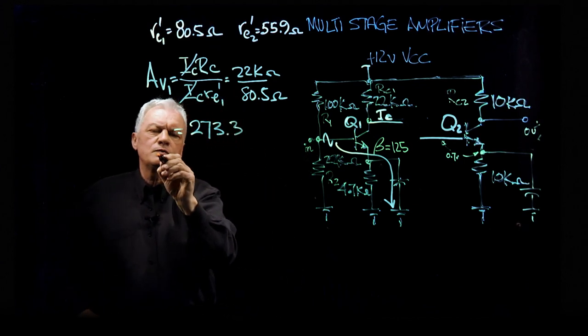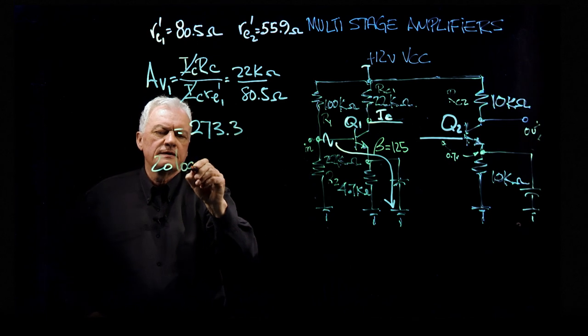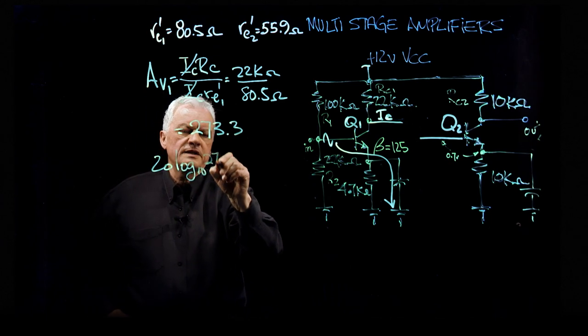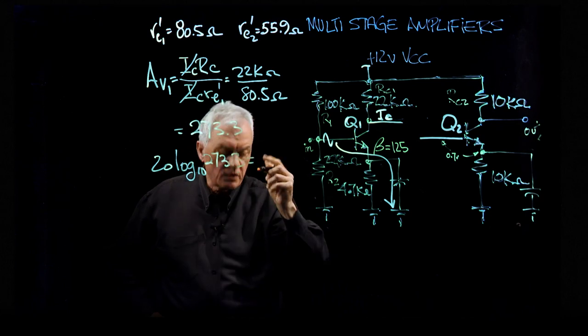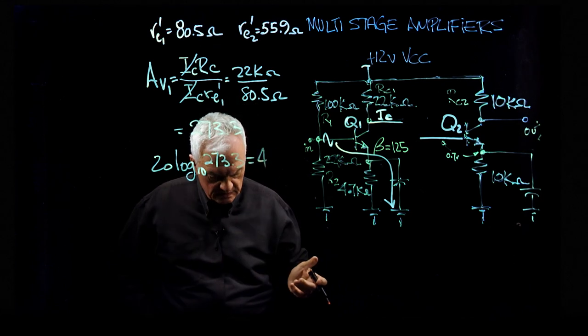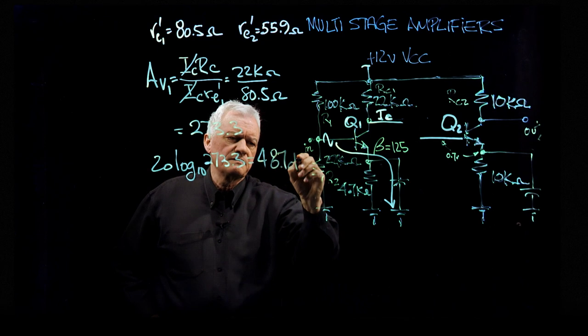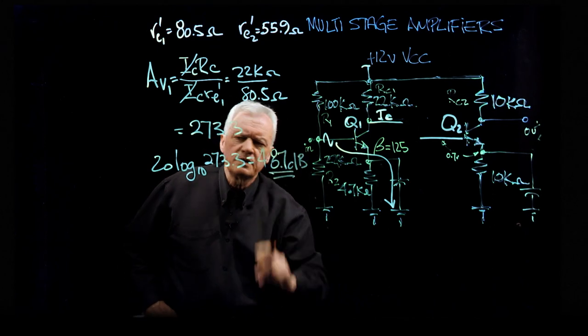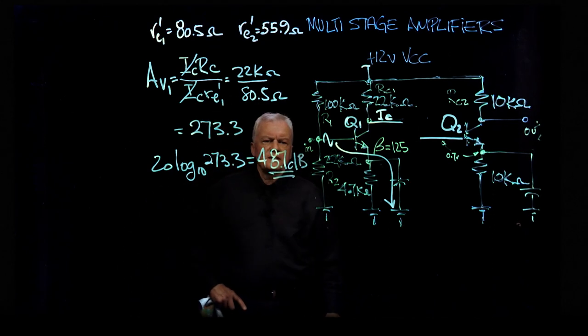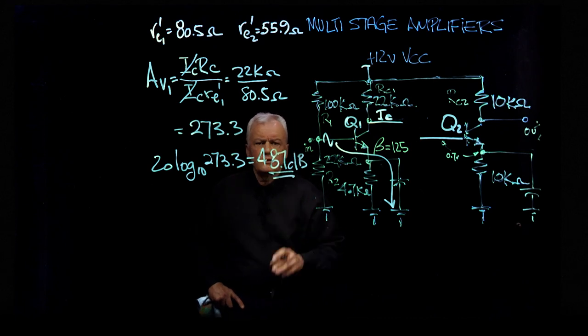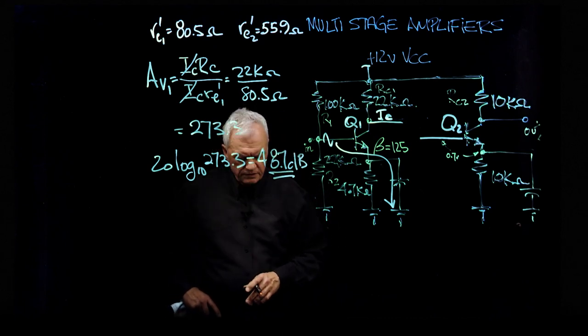If you do a 20 log to the base 10 of 273.3, you'll get a number more like 48.7 decibels. So we actually have our first gain stage without load at 48.7 decibels.